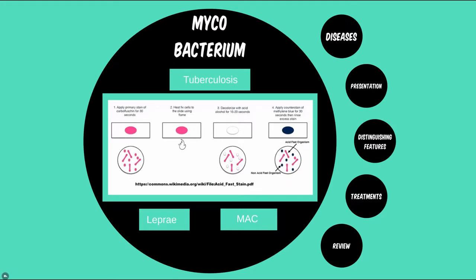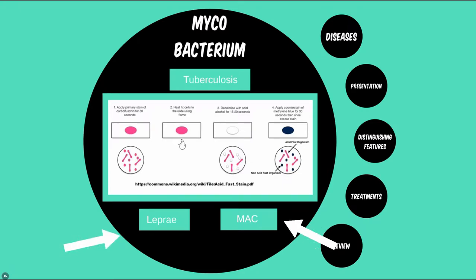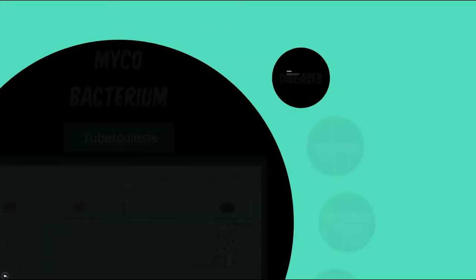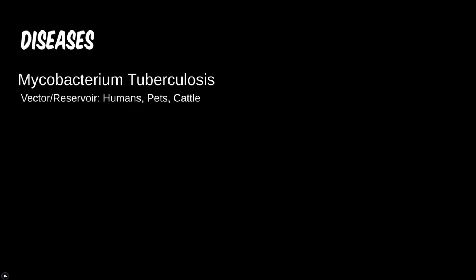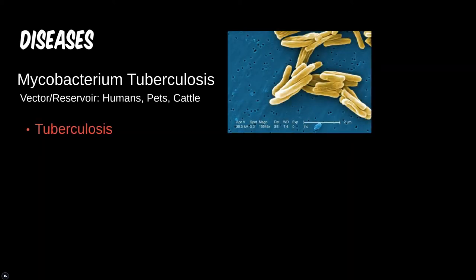Within the Mycobacterium genus, there are three species that we will focus on: M. tuberculosis, M. leprae, and a grouping of non-tuberculous mycobacterium. With Mycobacterium tuberculosis, we have the historically significant and still lethal tuberculosis disease. Along with the plague discussed with Yersinia pestis, M. tuberculosis is probably the bug of most historic significance.